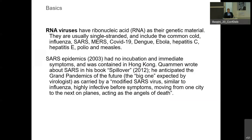SARS-CoV-2 is an RNA virus similar to SARS, influenza, MERS, dengue, and Ebola. I want to quote what Quammen said in 2012: 'The grand tendency of the future — the big one — which the virologists were expecting will be carried by a modified SARS virus, similar to influenza, highly infectious before symptoms, which will move from one city to the next on planes.' This was written in 2012, so this guy had a very clear vision of the possible danger for humanity.